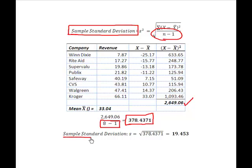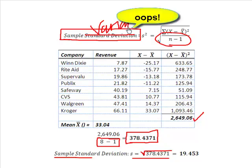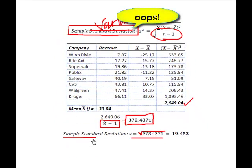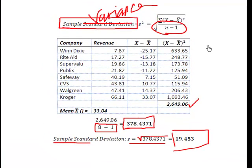The relationship between the sample standard deviation and sample variance is exactly the same as for the population: the sample standard deviation is simply the square root of the variance. I take the square root of 378.4371 to give me the standard deviation of 19.453. Finding population versus sample variance differs only in the denominator; finding the standard deviation from the variance is always the same relationship.